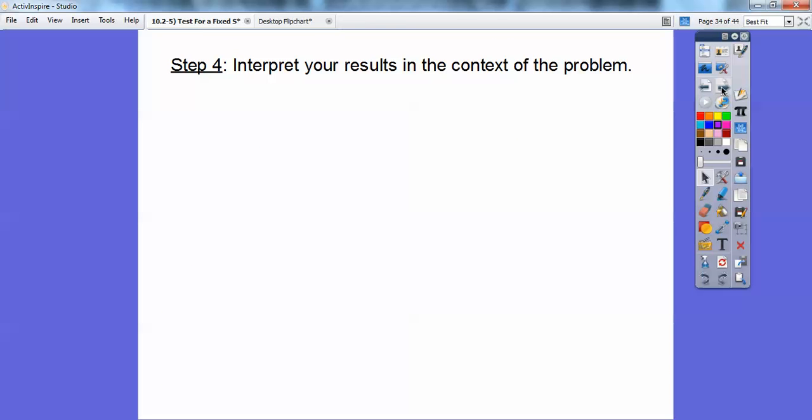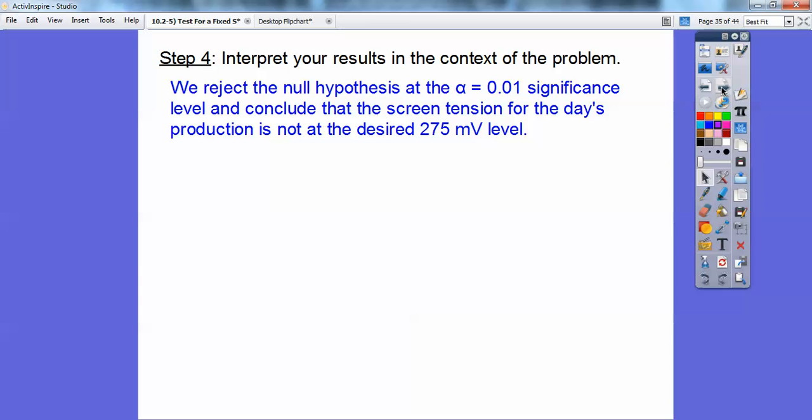So step four, interpret your results in the context of the problem. Yes, write that down. Okay, so we reject the null hypothesis at the 1% significance level and conclude that the screen tensions for the day's production is not at the desired 275 millivolt level.